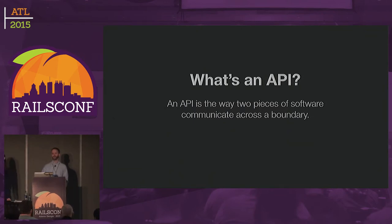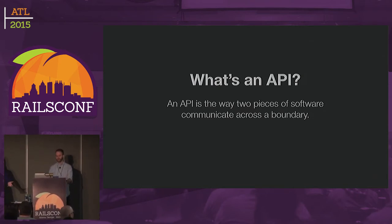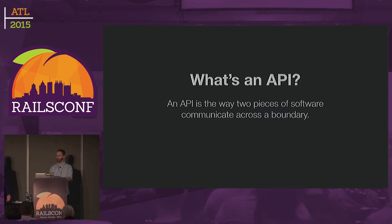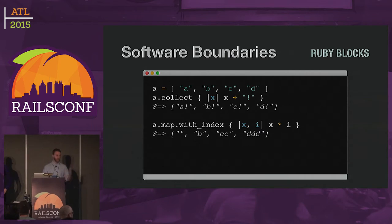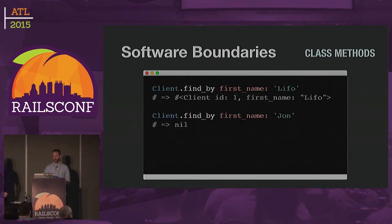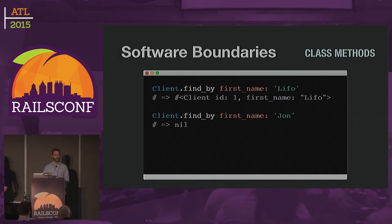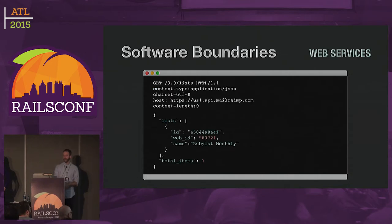You probably at least kind of know what an API is already, but it stands for Application Program Interface. APIs are pretty much everywhere. If you've done any programming at all, you've used an API, because that's just interfacing with that program. APIs are just the way two pieces of software communicate across a boundary, and there are all kinds of different boundaries everywhere you look. Ruby blocks are an example of a boundary. Language features are typically APIs of that language — class methods, object-oriented programming. All of the classes you generate expose APIs. And then, of course, the thing we're here to talk about today: web services.